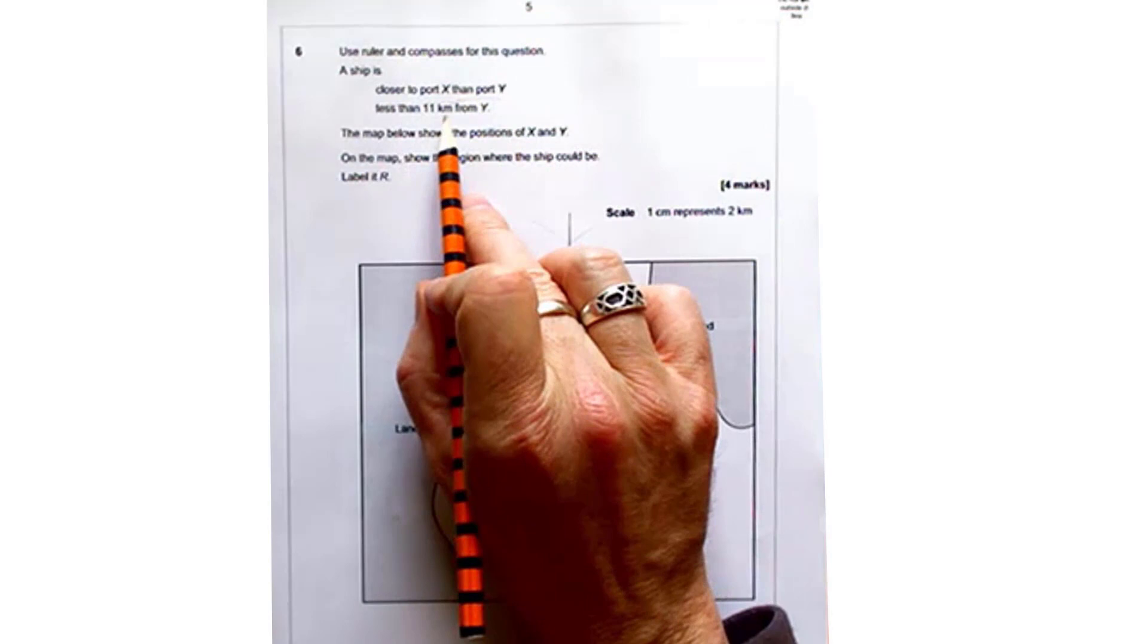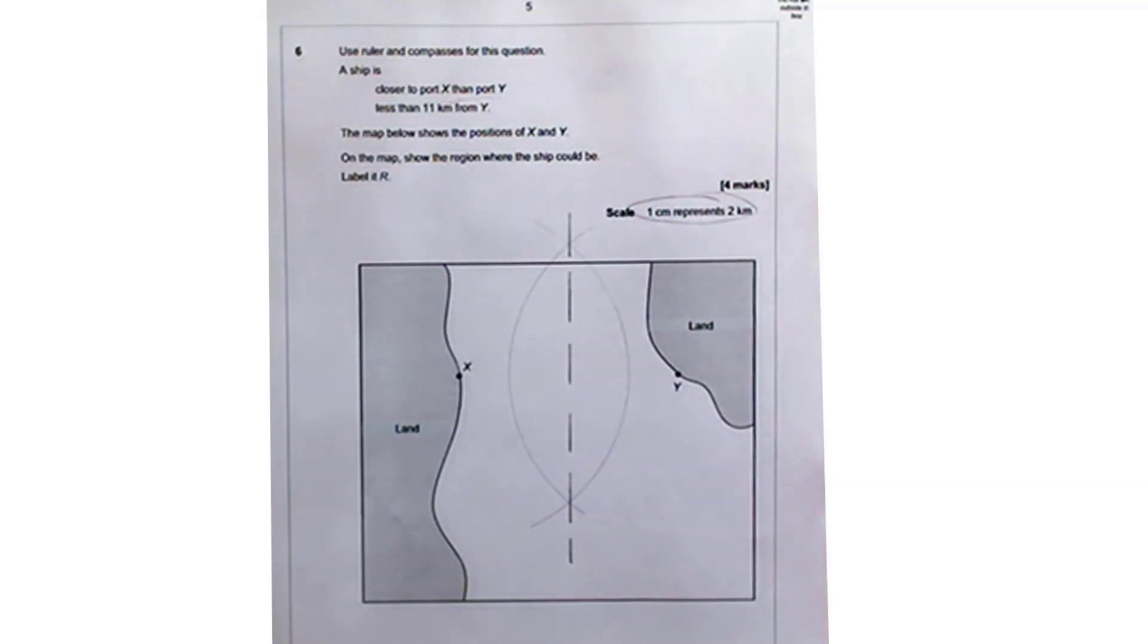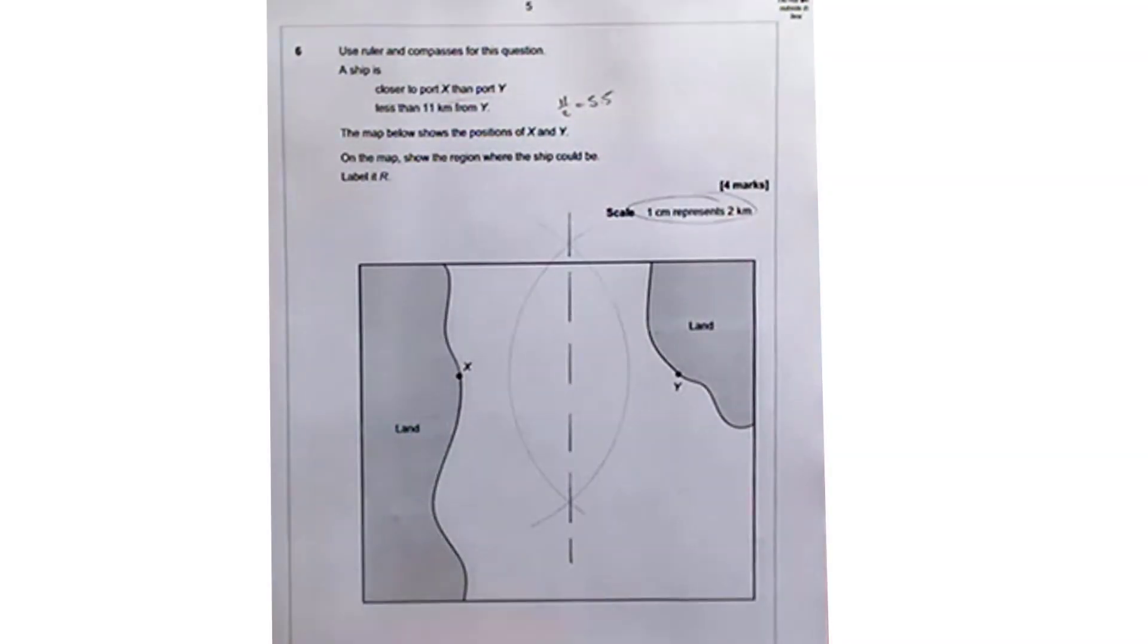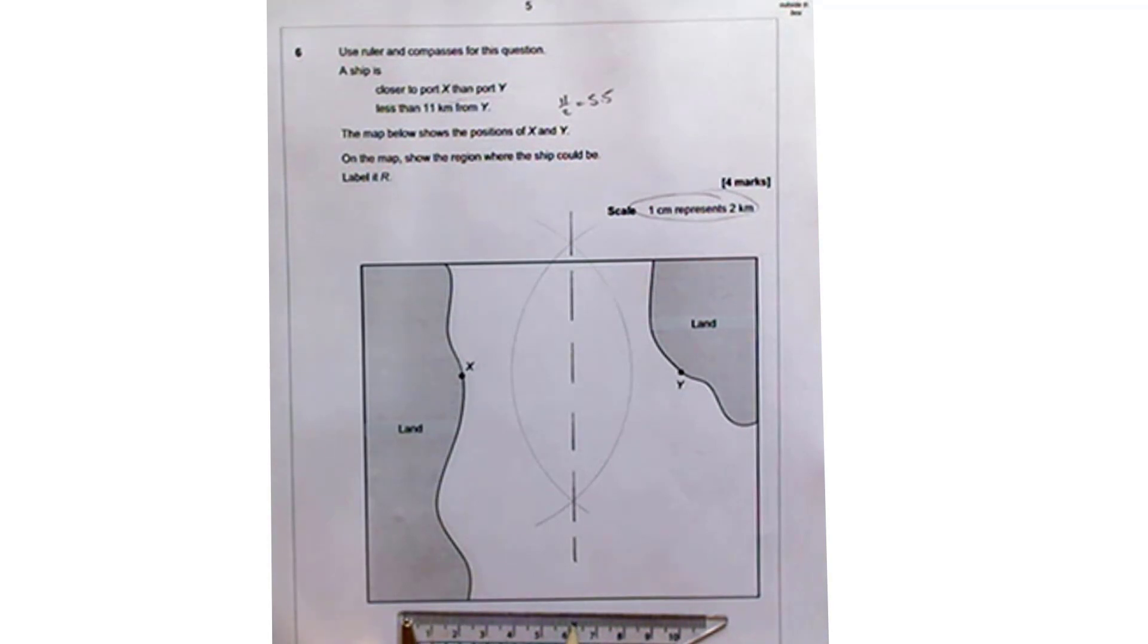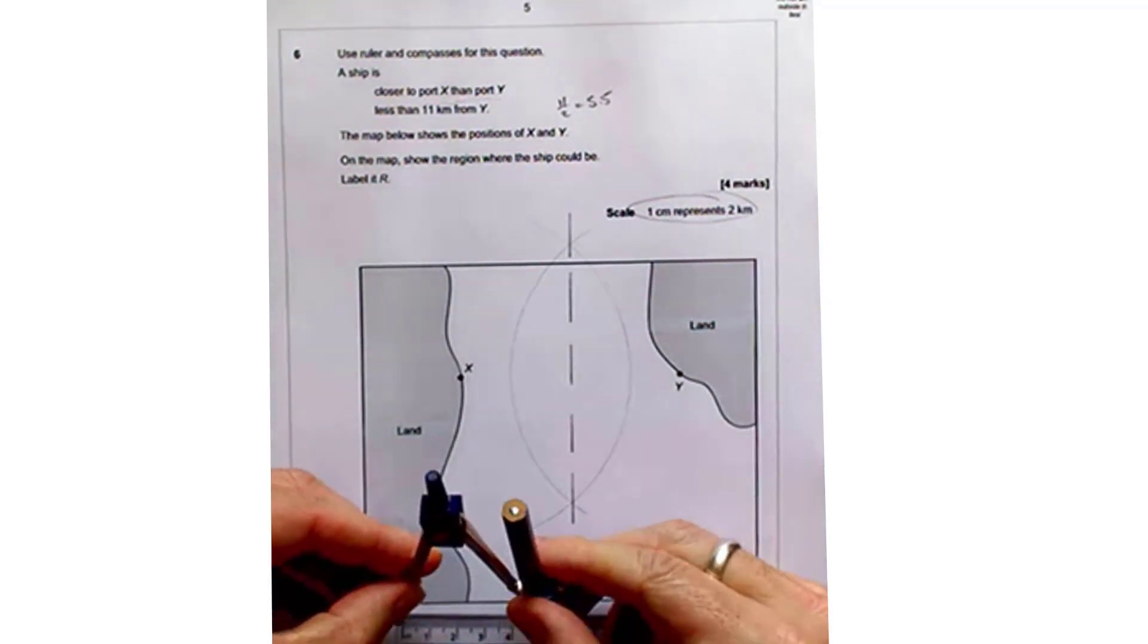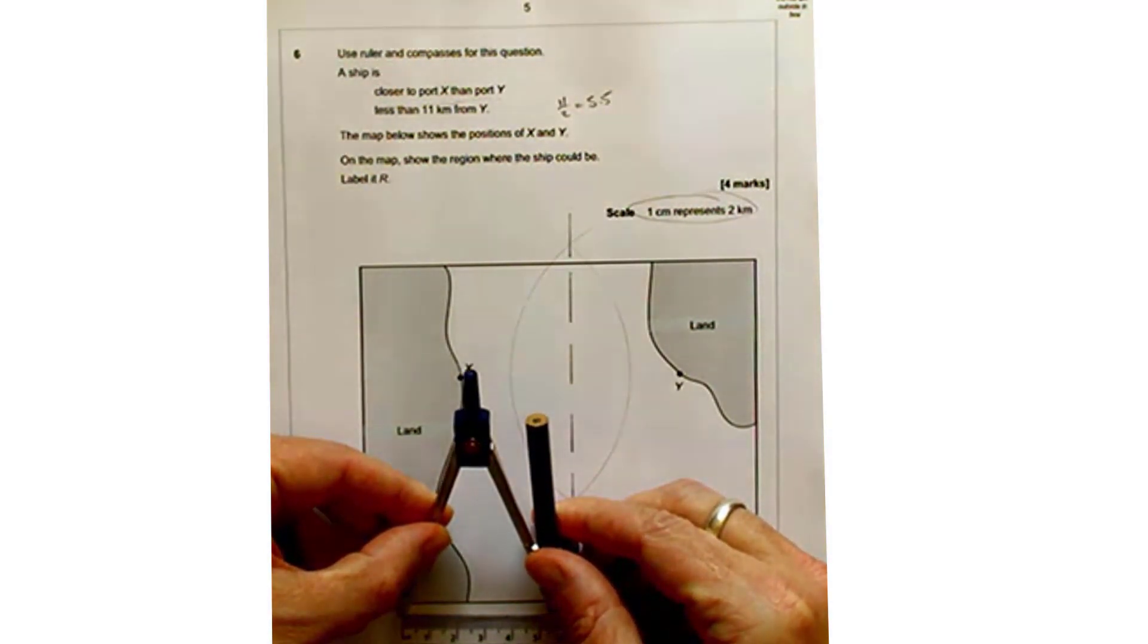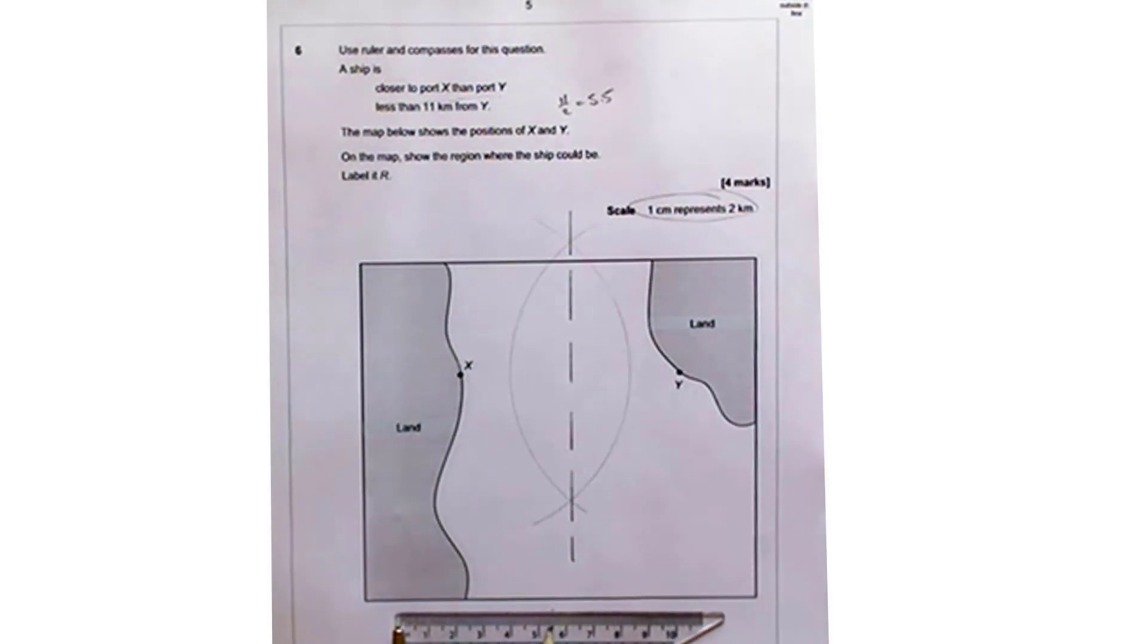Now next we need to work out the points which are less than 11 kilometers from Y. Now the scale of this diagram is 1 centimeter represents 2 kilometers. So I take an 11 and divide it by 2, I should have a distance of 5.5 centimeters on my diagram. So, we need to get our compasses out again, we need to set it to 5.5 centimeters. So we can use the marks on our ruler to make sure the distance between the tip and the pencil is exactly 5.5. And then we can draw a second arc based on Y.